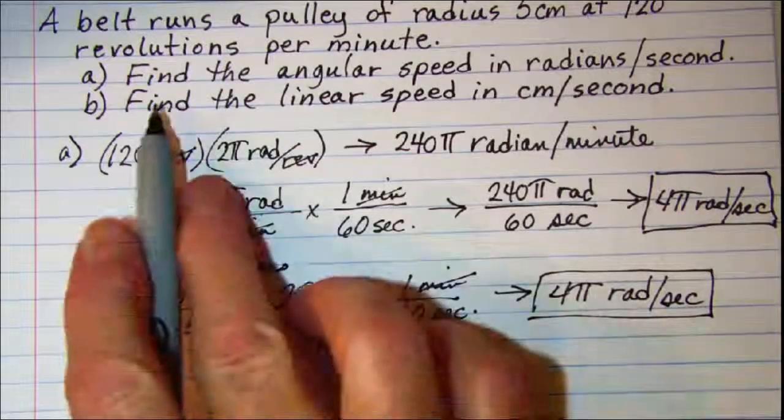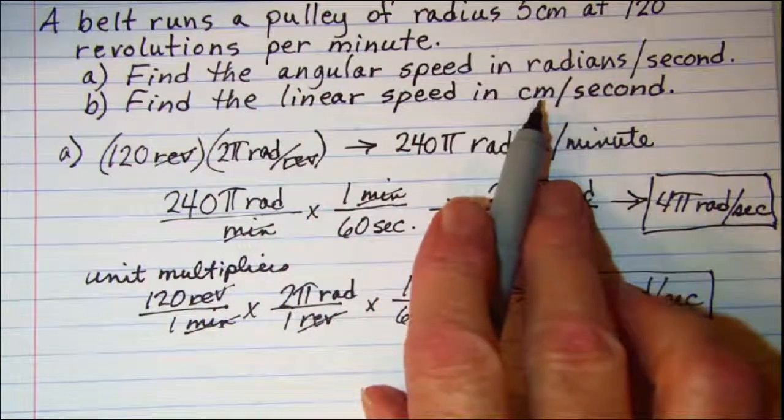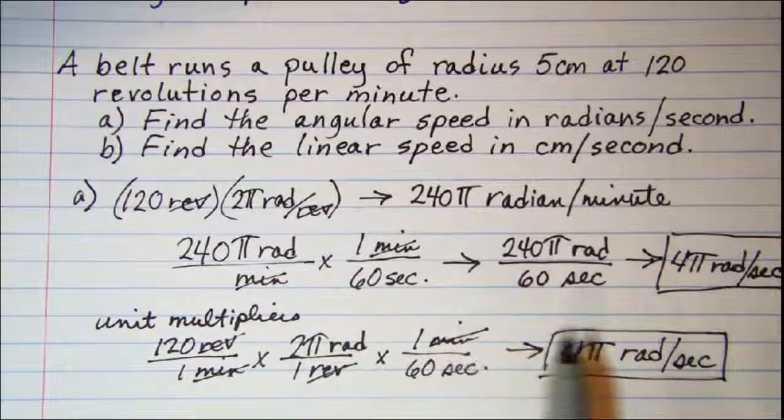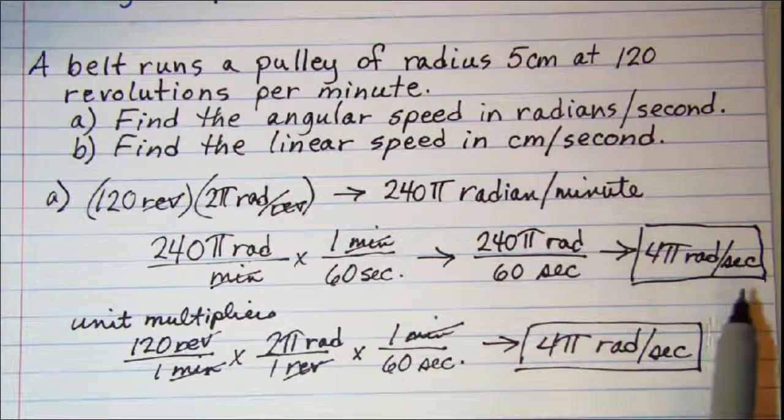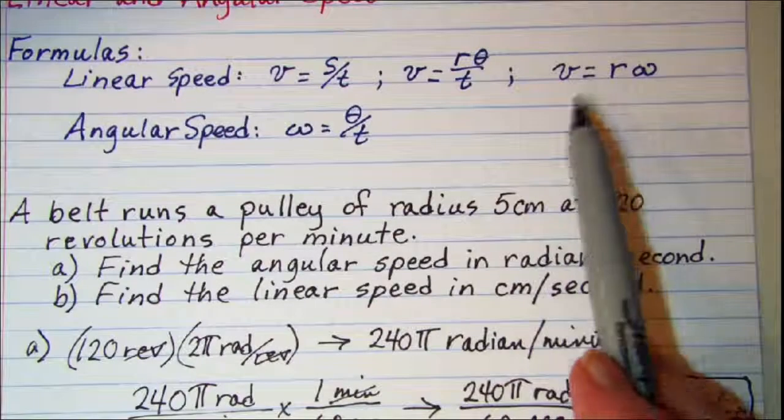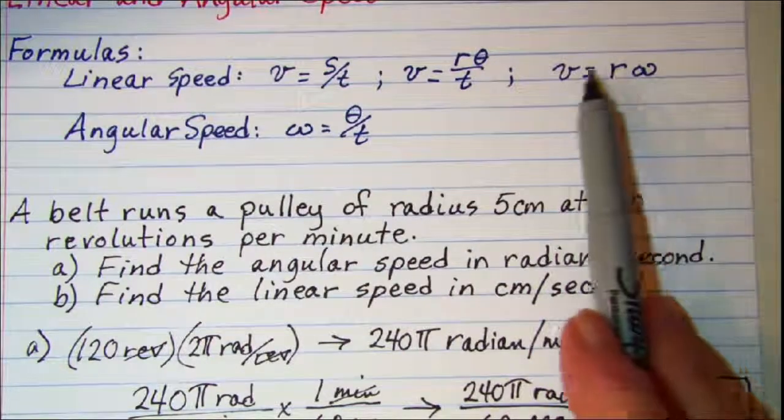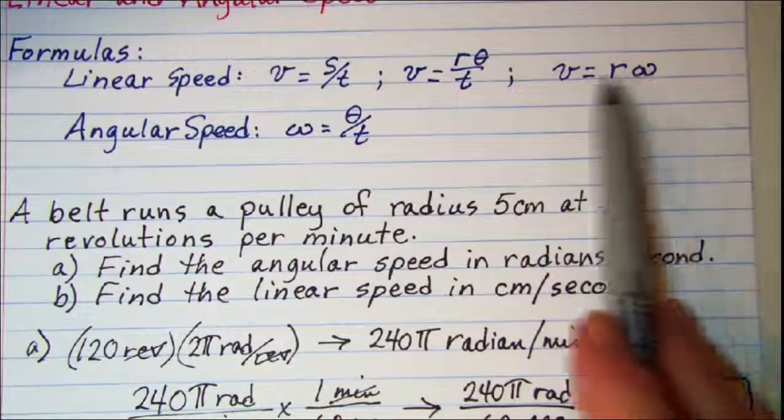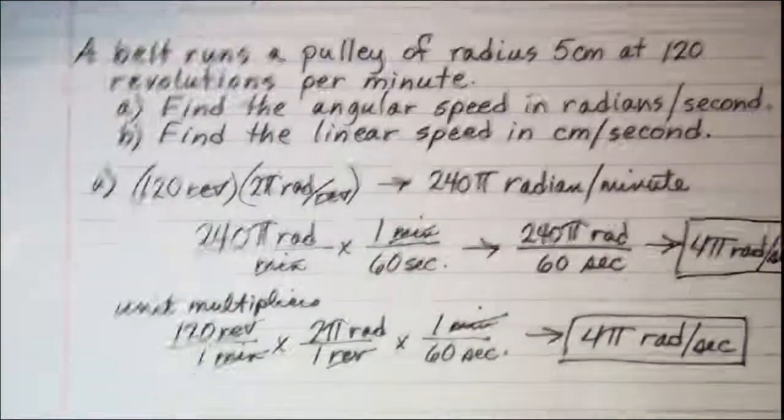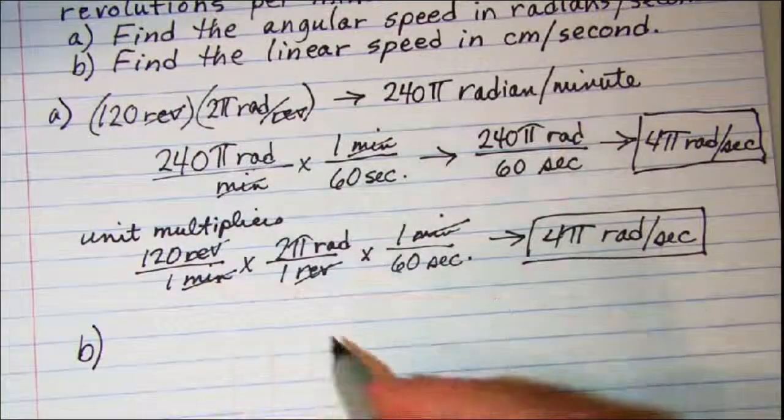Our part B problem says to find the linear speed and I want to go to centimeters per second. We know our angular speed is 4π radians per second. And when I want to make a connection between linear speed and angular speed I can use this formula. Velocity equals radius times the angular speed.